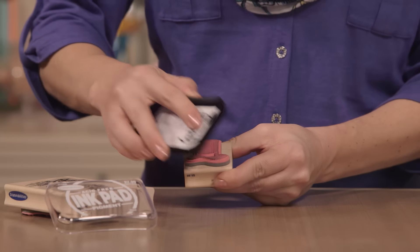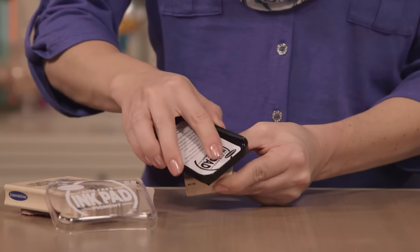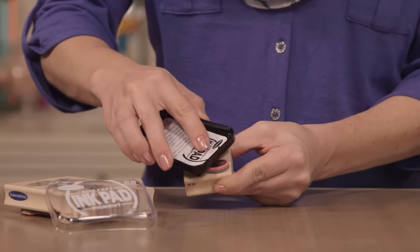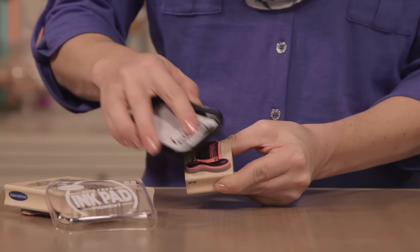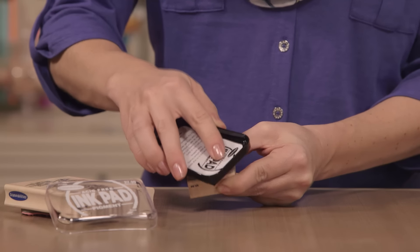All right, now I'm ready to ink up my stamp. Here's a trick. Turn the stamp over, pick up the ink pad, and dab it onto the stamp like this. It's easier to see when you have enough ink coverage, and it also works great if your stamp is bigger than the ink pad.